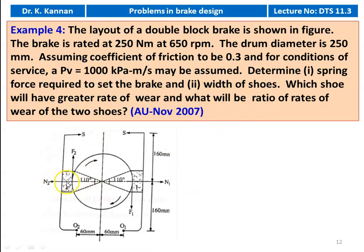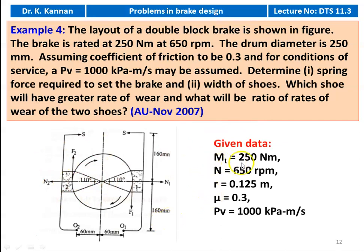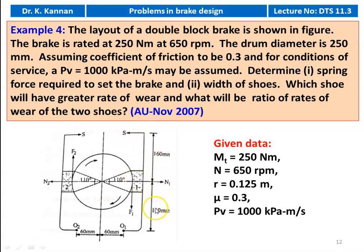The given data: Torque = 250 Newton meter, speed = 650 RPM, radius of the drum = 0.125 meter, coefficient of friction = 0.3, PV = 1000 kilopascal meter per second. The spring force acts at a distance of 160 + 160 = 320 millimeter from center. O1 and O2 are the fulcrums at a distance of 60 millimeter from the center. The angle 2θ = 110 degrees.